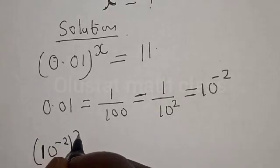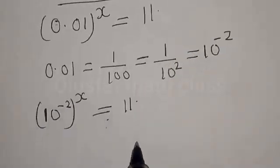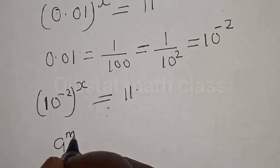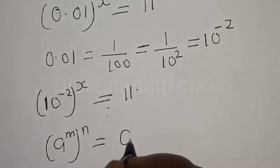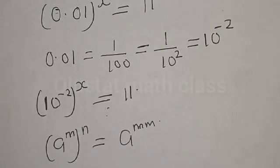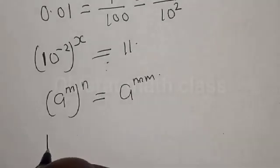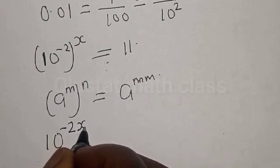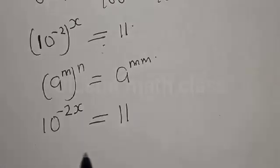Then we have 10 raised to the power of minus 2, and 10 raised to the power of s is equal to 11. Remember, if you have a base raised to the power of n, raised to another power, you multiply the exponents. So this equation becomes 10 raised to the power of minus 2s is equal to 11.